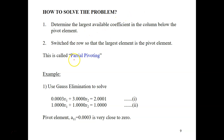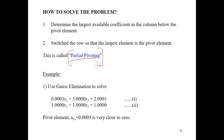To solve these problems, there is a method called partial pivoting. There are two methods: partial pivoting and complete pivoting. However, we will only cover partial pivoting since it is common, while complete pivoting is very rare and not common.